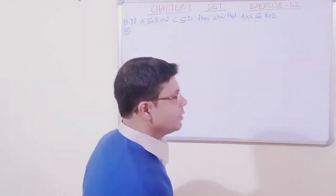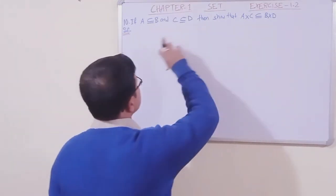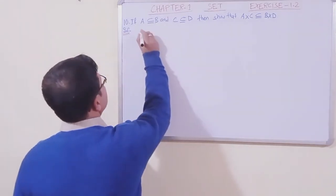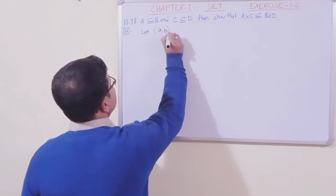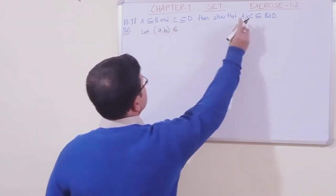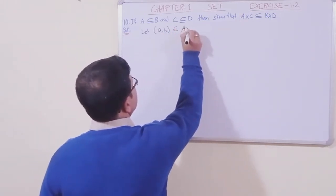Now, what we will do is consider any ordered pair. Let's suppose (a,b) belongs to this A×C.